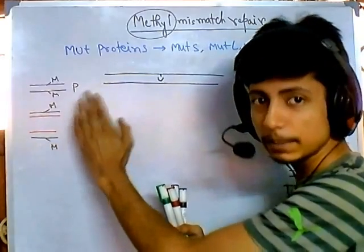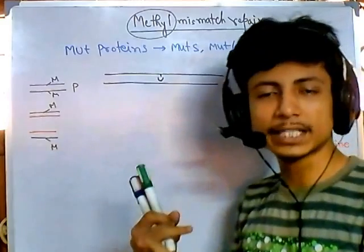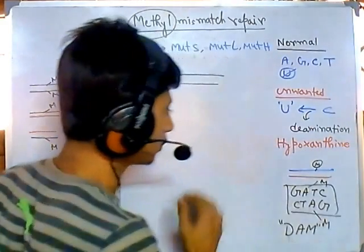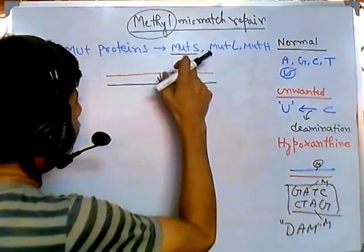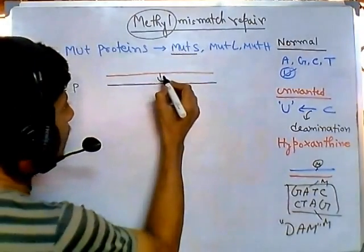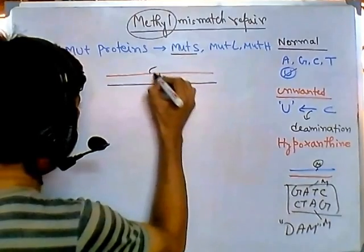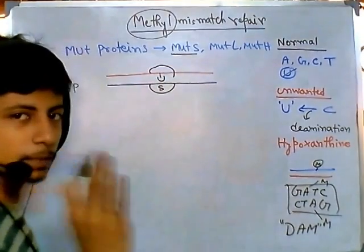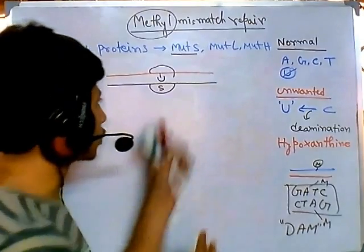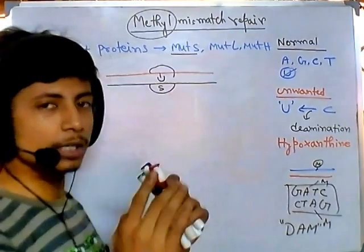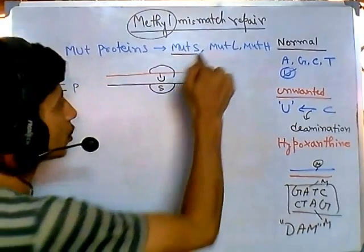Since the daughter strand is newly synthesized, if there is any misincorporation of bases during replication, the cell checks this daughter strand, recognizes it, cuts the strand, and makes a repair in the daughter strand only. There is no need to repair the parent strand because it has been there longer. This is why the parent strand is marked with methylation — that's why this is called methyl mismatch repair, because methylation distinguishes the parent strand from the new daughter strand. First, MutS is recruited and recognizes the region where the wrong nucleotide was incorporated.